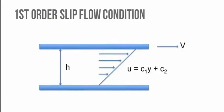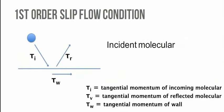We can derive the slip length from the first-order slip flow condition in fluid dynamics. Flow velocity is the first-order expression of distance in y direction. Near the wall, a molecule hits the wall and gets reflected.